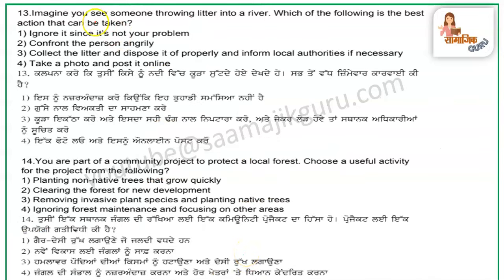Question number 13: Imagine you see someone throwing litter into a river. Which of the following is the best action that can be taken? Option A: Ignore it since it is not your problem. Option B: Confront the person angrily. Option C: Collect the litter and dispose of it properly, and inform local authorities if necessary. The third option is correct.